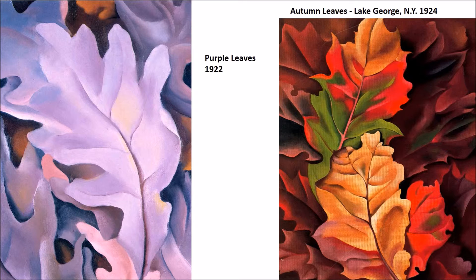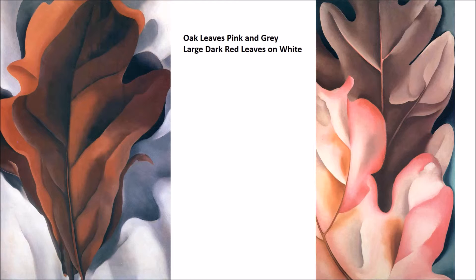Around this time, we start to see her looking at more organic forms. I always think of the purple leaves from 1922 as a predecessor of a lot of the flower paintings she does while living in New York. If you've ever been to this part of the world during autumn, the range of colors is really beautiful. She's finding one small aspect of existence and really focusing down on that to show the many variations you can see by being so close to an object.